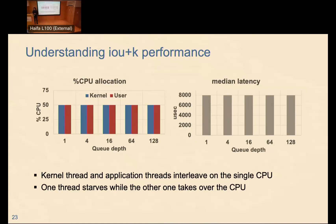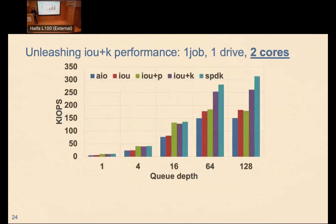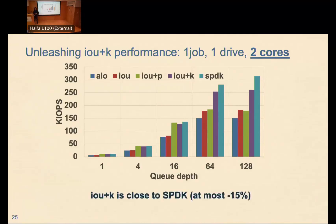To get reasonable results for io_uring+K, we enabled a second core. With two cores, io_uring+K gets very close to SPDK — within 10–15% depending on queue depth. This is very reassuring.